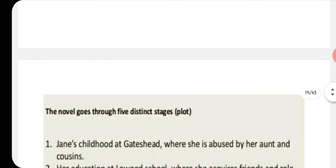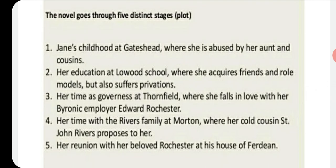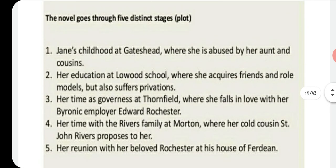The novel passes through five distinct stages: Jane's childhood, her education at Lowood School, her time as a governess at Thornfield, her time with the Rivers family at Moor House, and finally her reunion with Rochester at his house, Ferndean. That concludes the introduction and biography for this novel. We will discuss the character analysis and summary in the next lecture — goodbye for now.